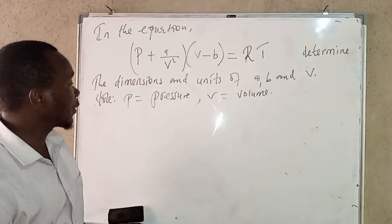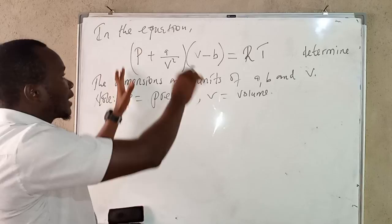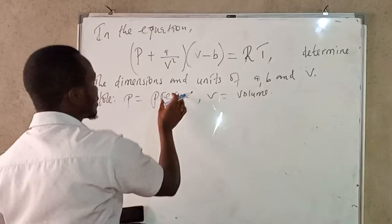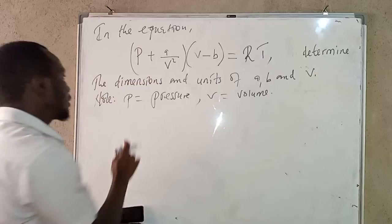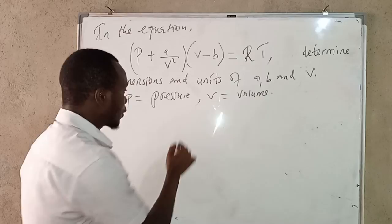In this video, we are going to look at one of the problems under dimensional analysis. We have been given the Van der Waals equation: (P + A/V²)(V - B) = RT, where R is a constant. We are asked to determine the dimensions and units of A, B, and V. Note that P is pressure and V is volume.